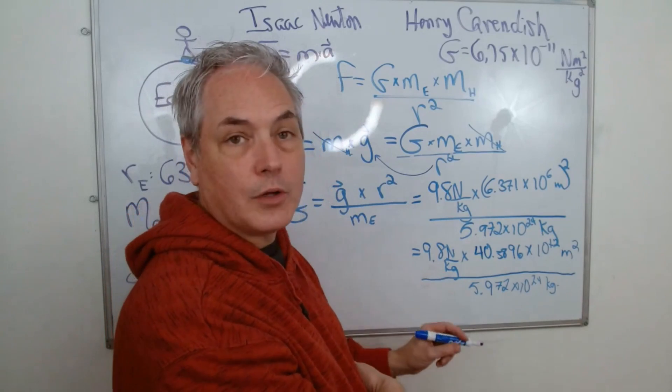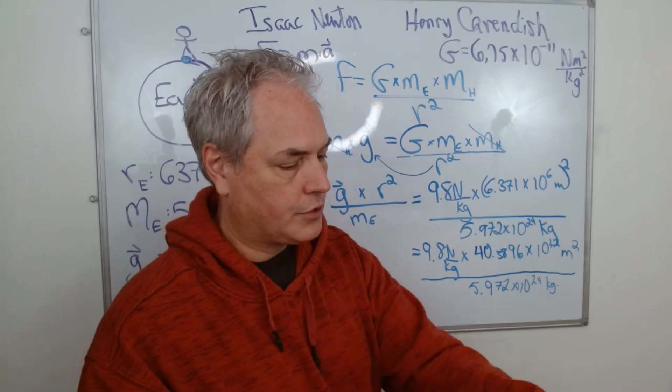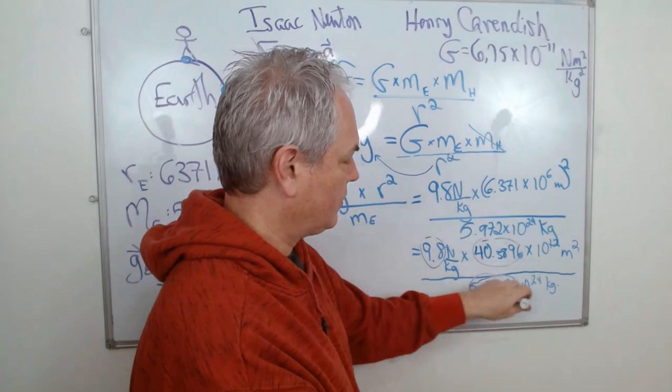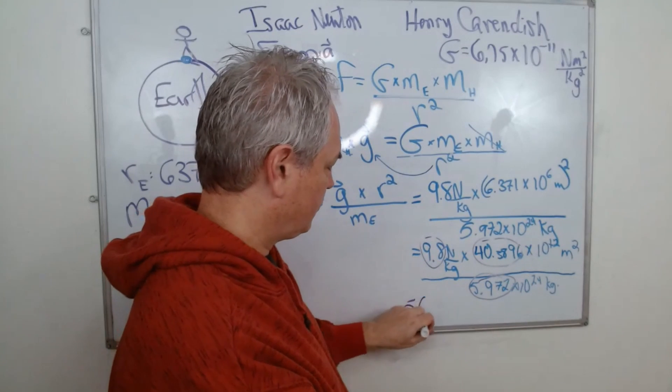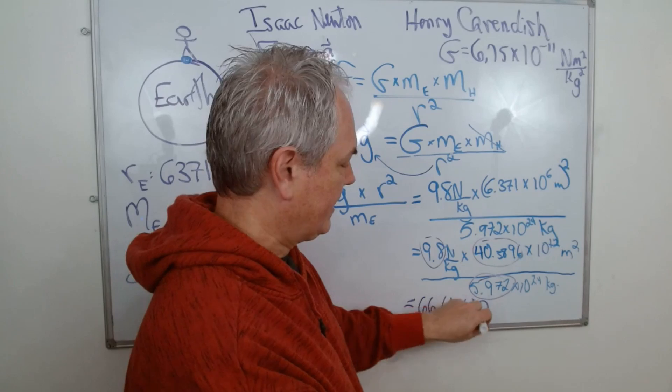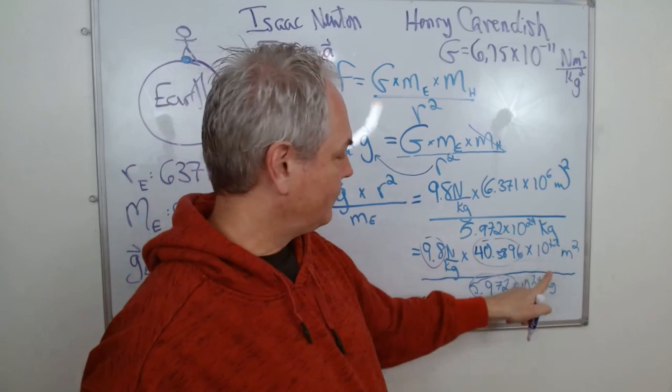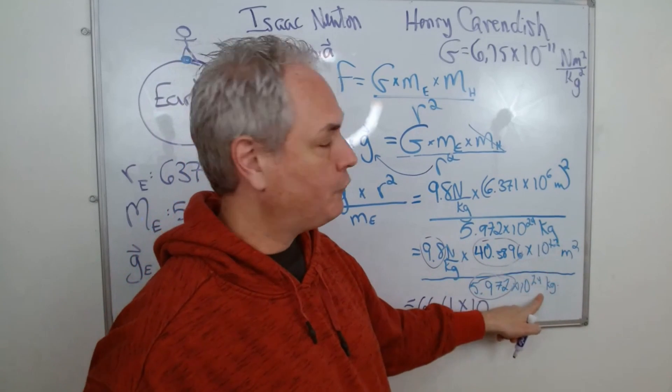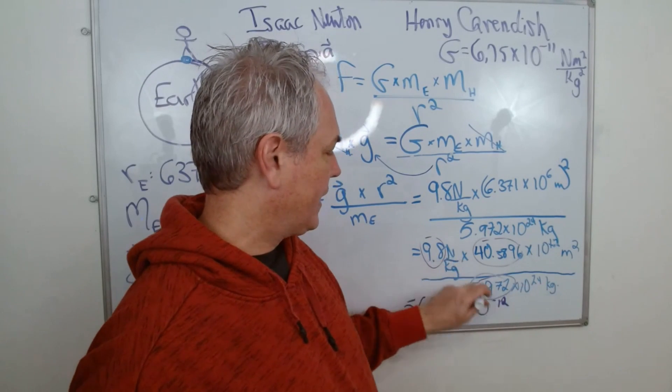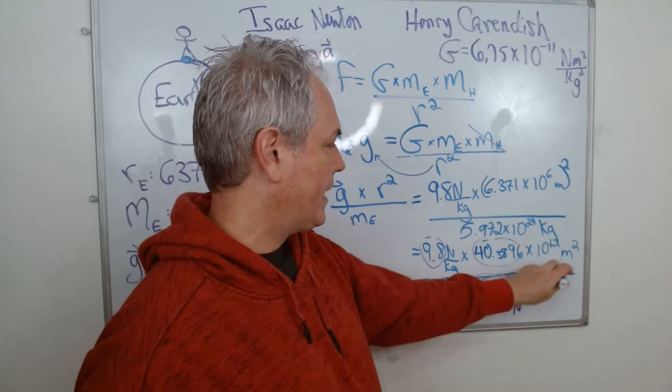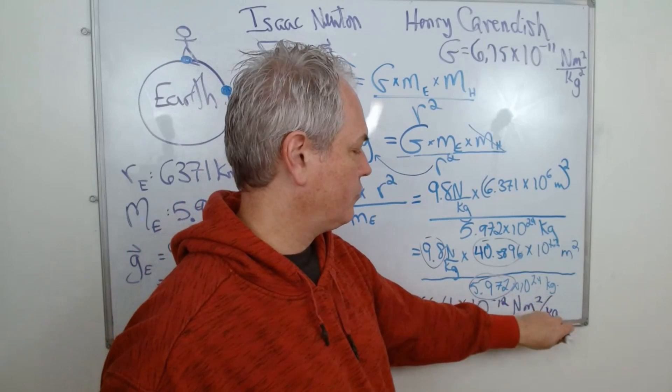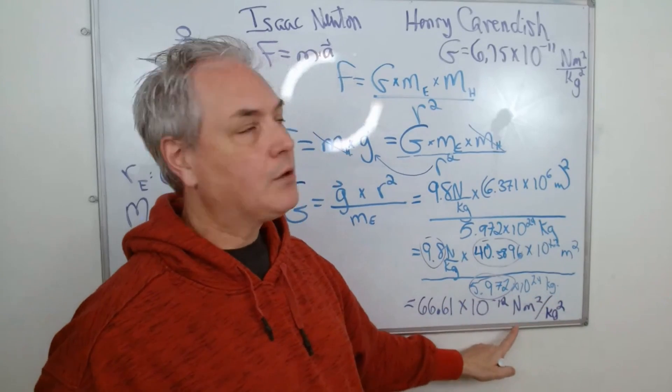Now here, there's a few things we can do. First of all, we can do the multiplication with the numbers that are this one here, this one here, and this one here. And this is equal to 66.61 times 10 to the—we have here 10 to the power of 12 divided by 10 to the power of 24. 12 minus 24 is negative 12. Here we have newton, we have meter squared over kilogram over kilogram, kilogram, kilogram squared. So here we have the right units. That's what we were working on.